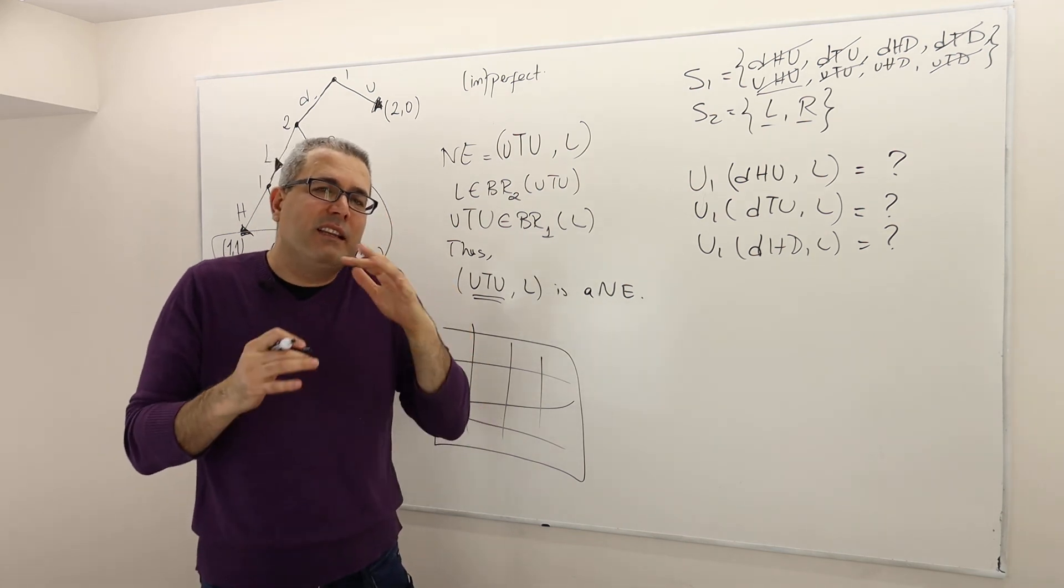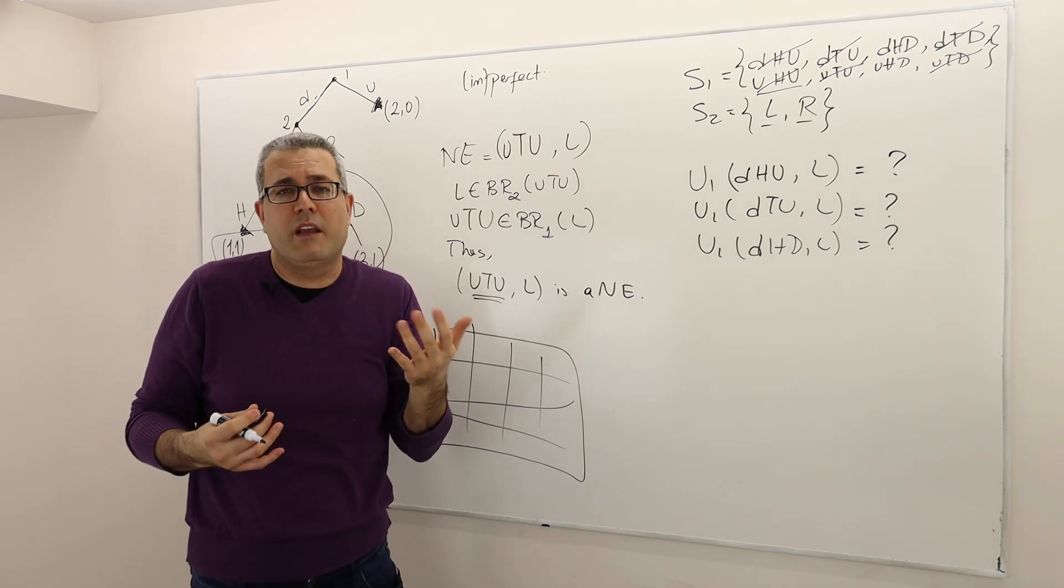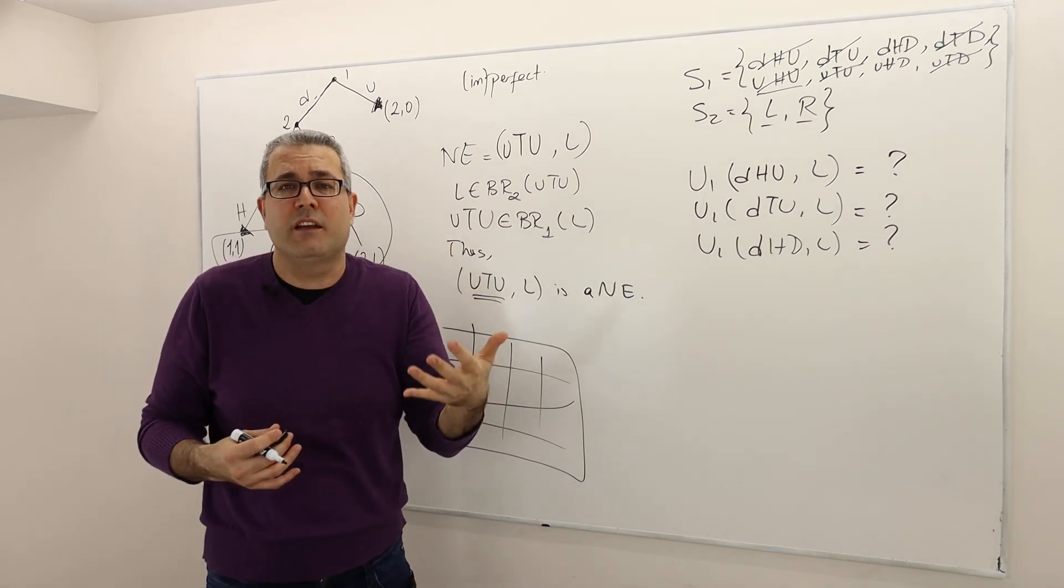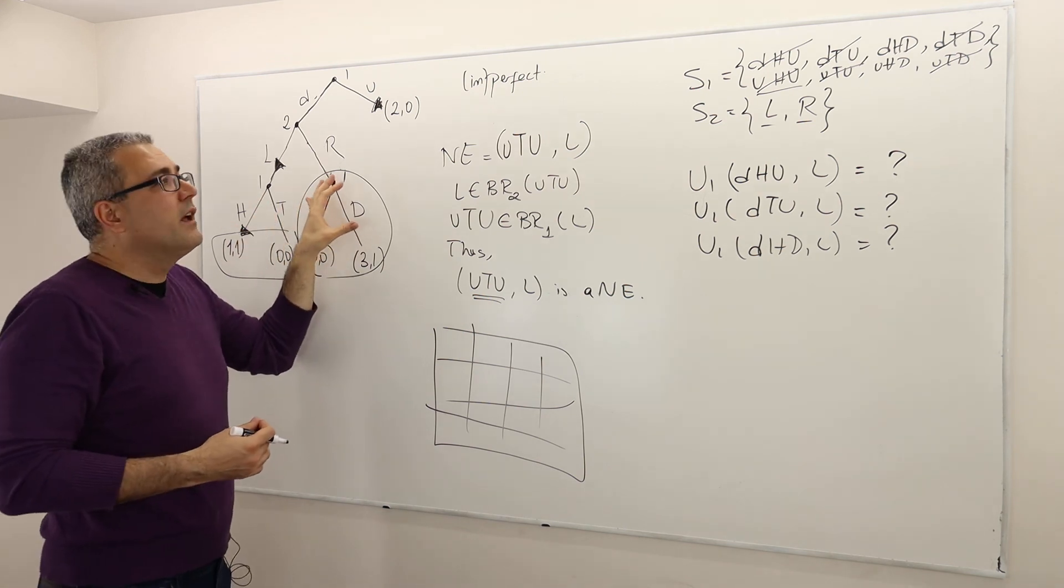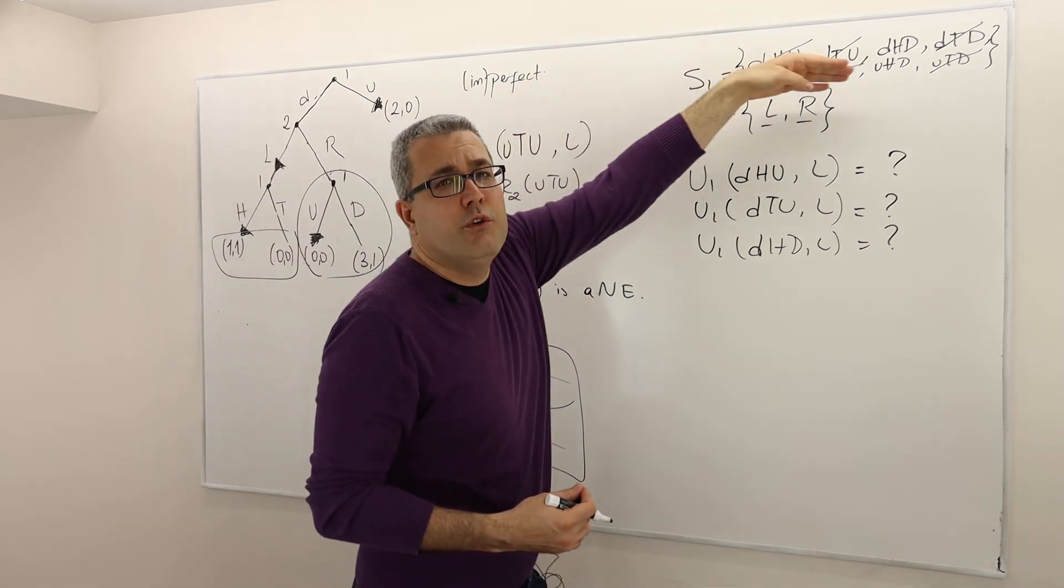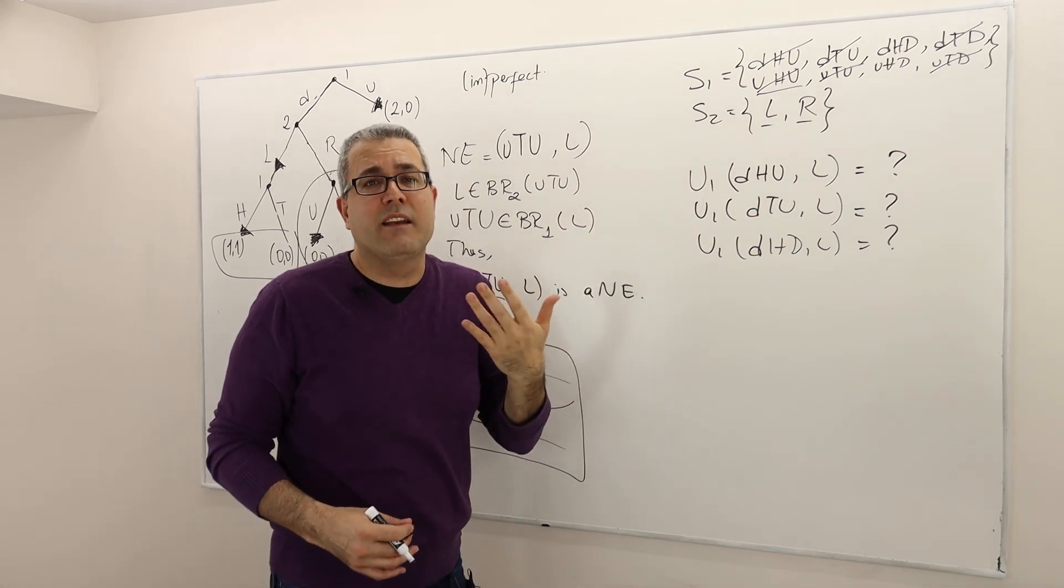So the optimality—the concept of optimality is slightly changing, which we call, by the way, sequential rationality. So what is the strategy for me as player one? Is it DHU, U2U? What is it that I do not need to revise again and again?